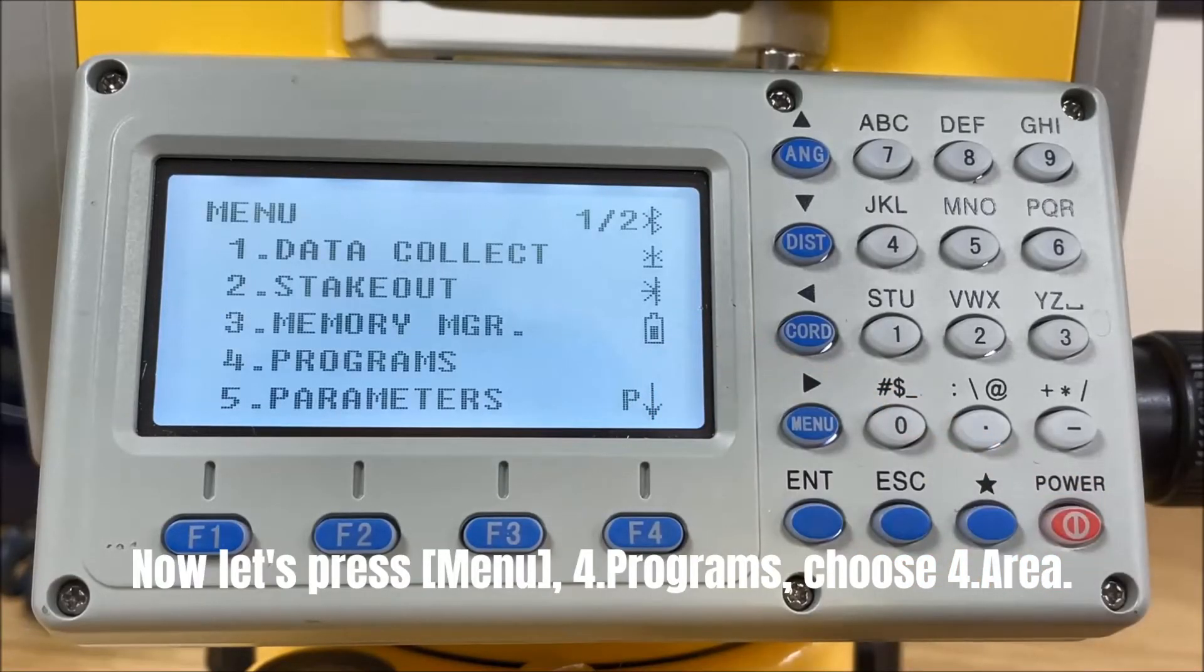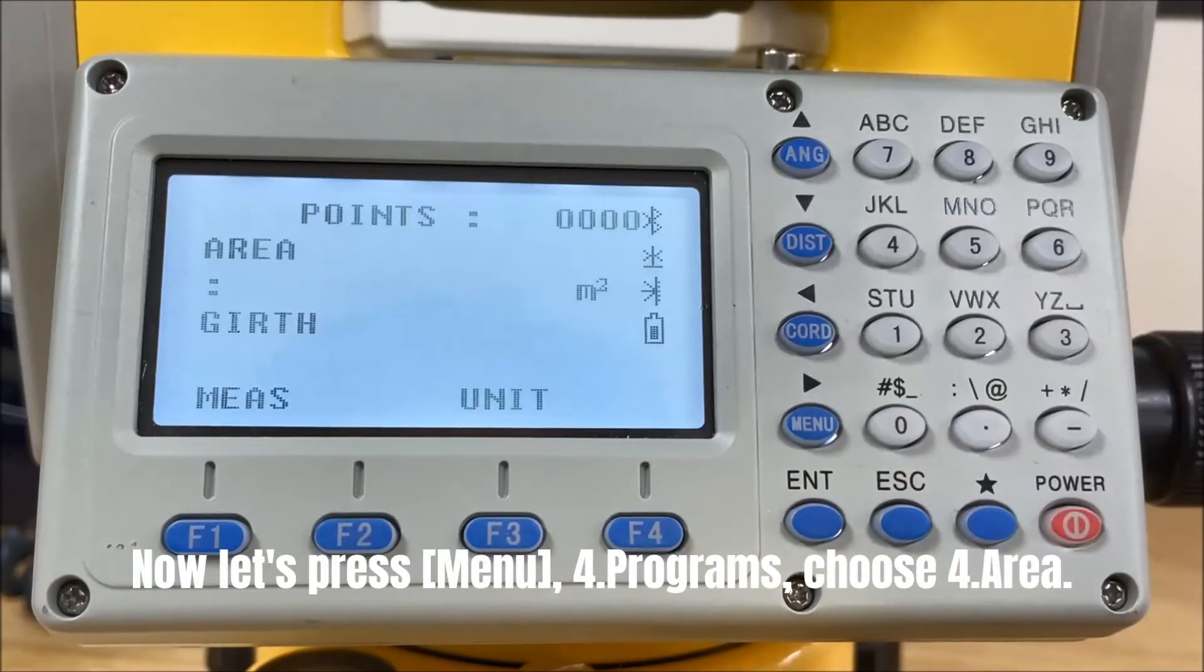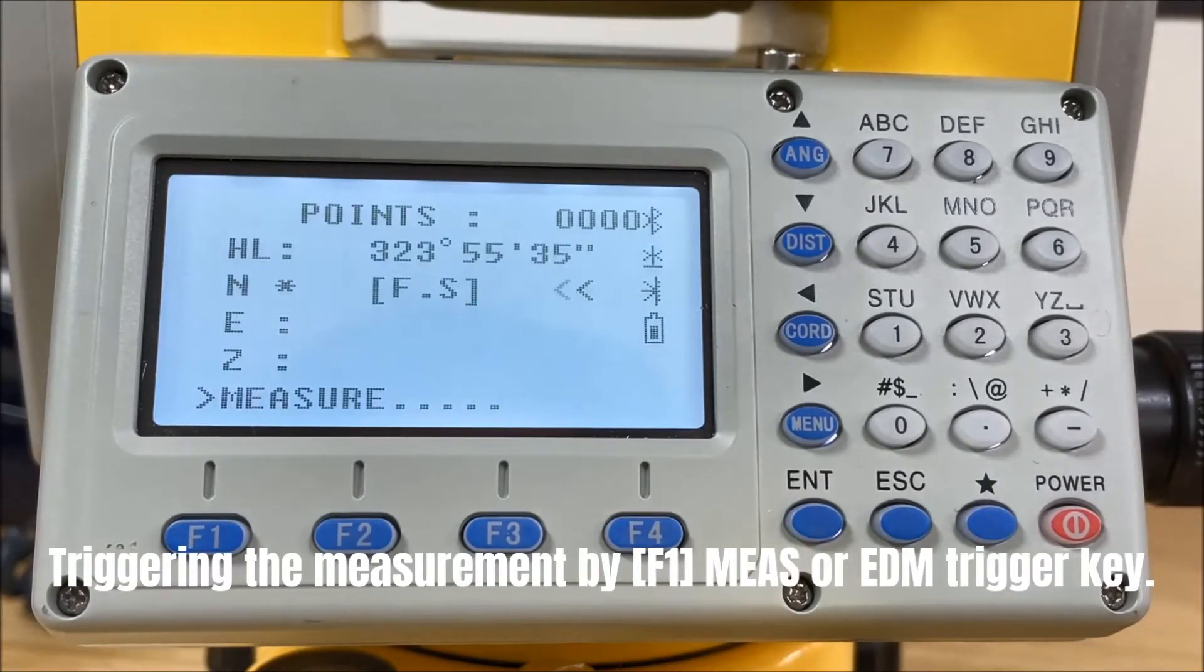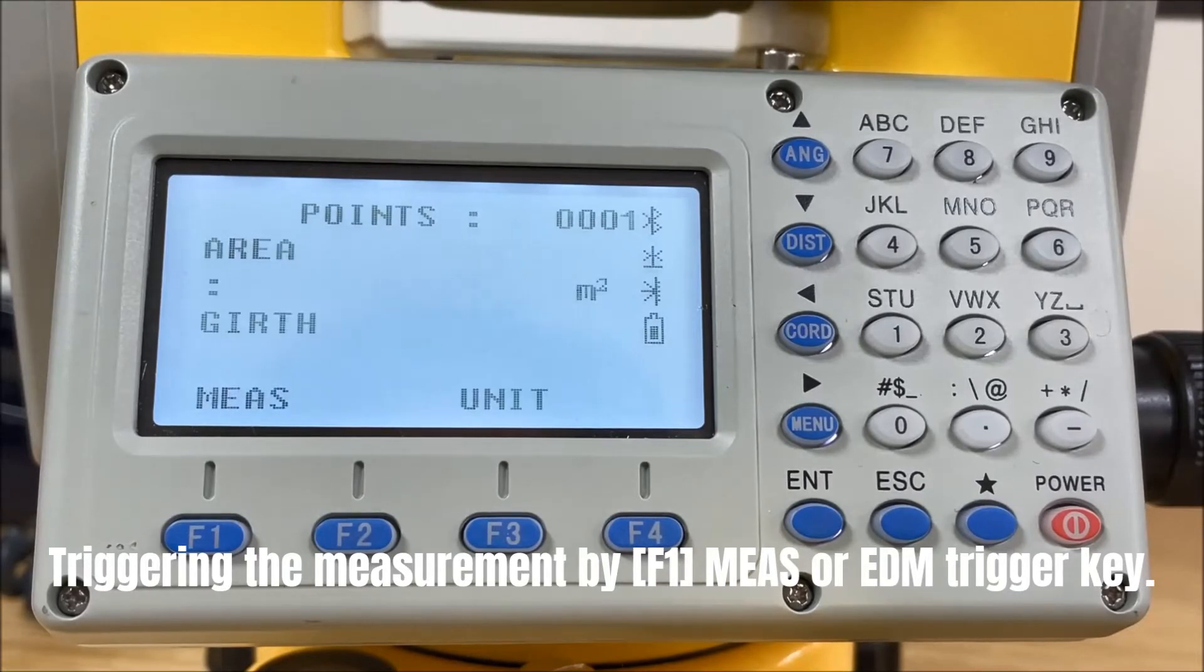Now let's press menu, programs, choose area. Aim at the first target P1. Triggering the measurement by F1 measure or the EDM trigger key.